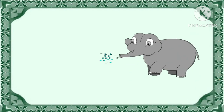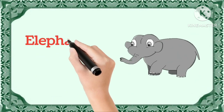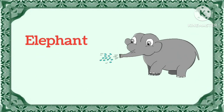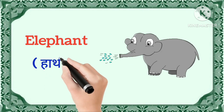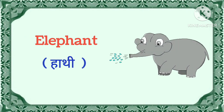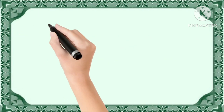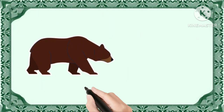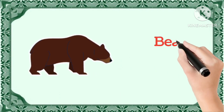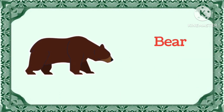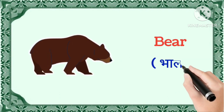Elephant. This is an elephant. Elephant means haathi. And this is bear. Bear means bhalo.